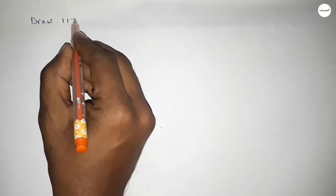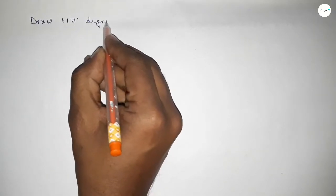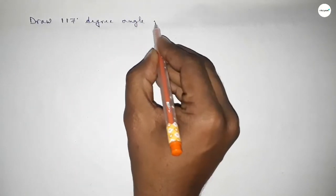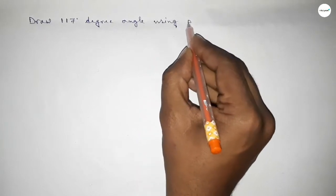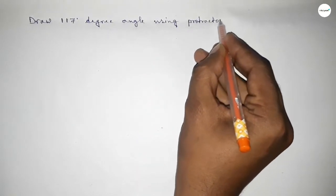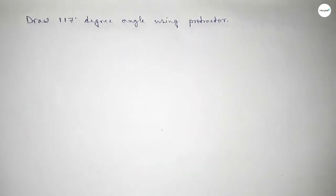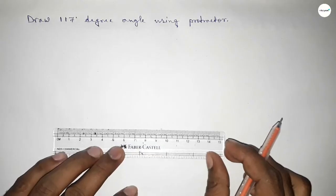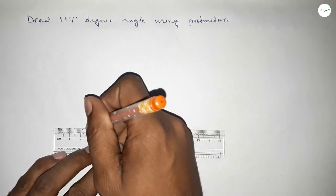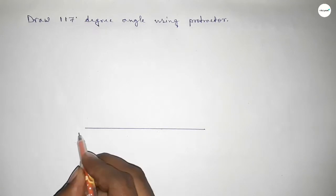Hi everyone, welcome to SSR Classes. Today in this video we have to draw a 117 degree angle by using a protractor. So let's start the video. First of all, we have to draw here a straight line of any length.